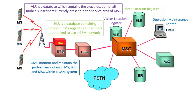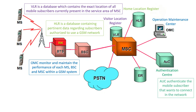Next is OMC — Operation Maintenance Center. OMC monitors and maintains the performance of each mobile station, BSC, and MSC within our GSM system. Next is AUC — Authentication Center. AUC authenticates the mobile subscriber that wants to connect to the network.